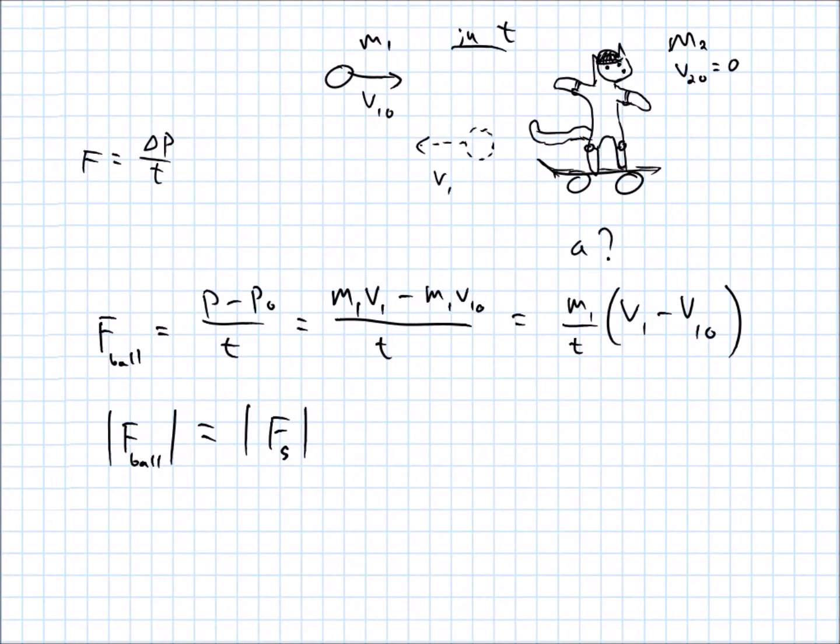which I'll just call Fs for skateboarder. So, in that case, the force of the skateboarder, magnitude anyways, is equal to M1 over T, V1 final minus V1 initial. Now, remember, if these variables scare you, if I had given us numbers, we could plug them in, and we would just know a number for the force. But also, we know that force on the skateboarder is equal to mass 2 times acceleration.